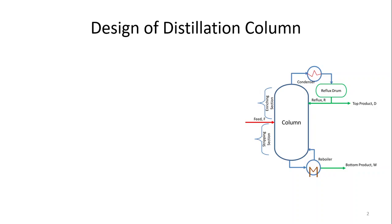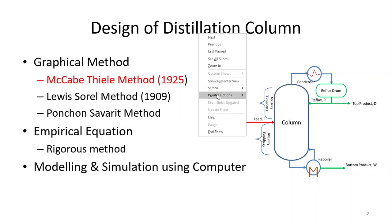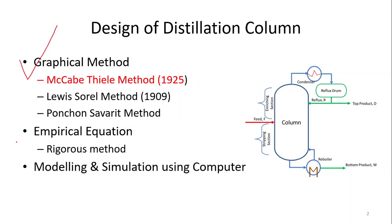There are two very common types of design methods used for the distillation column. One method is the graphical method and the second method is empirical correlations. In the graphical method, some very famous methods include the McCabe-Thiele method, the Lewis-Sorel method, and the Ponchon-Savarit method. By using graphs and manual calculations, we design the distillation column and evaluate all required information.